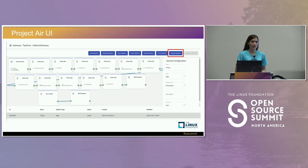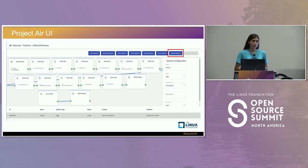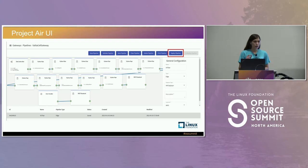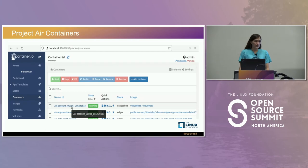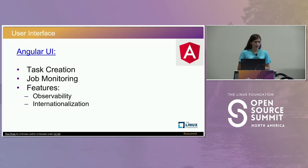We had a few different UIs for this project. The first is the Project Air UI for pipeline composability and deployment, showing different steps for our Python pipelines including broadcasting and error handling. You could create pipelines and click to deploy them. We also had Portainer to see all Docker components — whenever you deployed a Project Air pipeline, you could see a Docker container start for that pipeline processing. Additionally, we had an Angular web UI, a TypeScript-based open source web application framework commonly used within Intel.